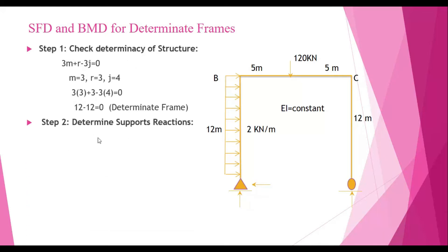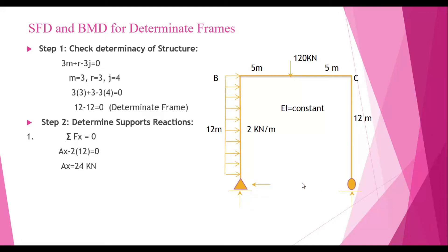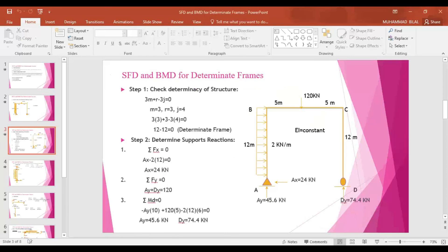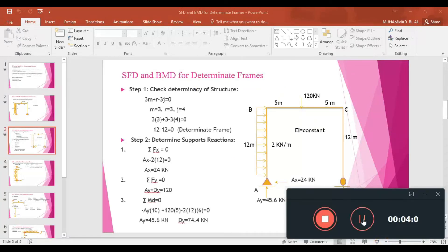Step two is to determine the support reactions. We can see there are only three reactions and we have three conditions of equilibrium, so we can determine these reactions easily. We will write the three conditions of equilibrium: the first is that the sum of horizontal reactions should be equal to zero.